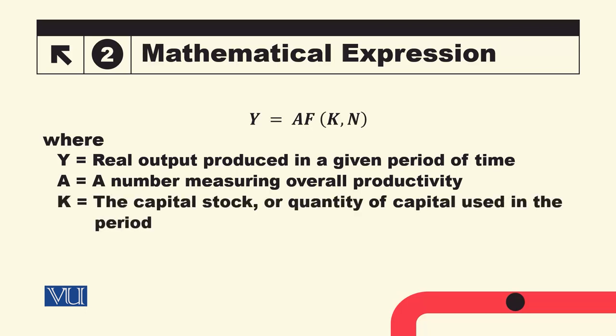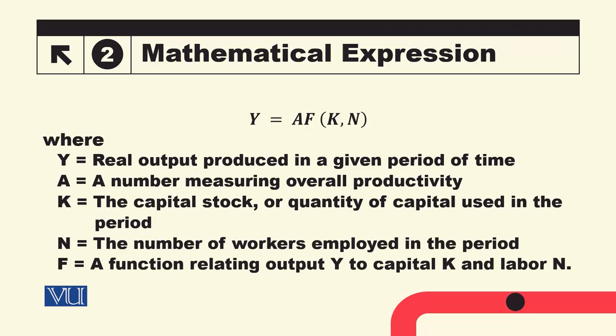K is the capital stock or quantity of capital used in that period. And similarly, N is the number of workers employed in that period. F is the symbol we use to show the functional relationship between factors of production and output.